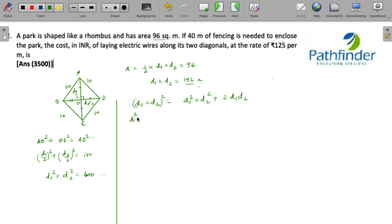Which means d1 square plus d2 square will be d1 plus d2 whole square minus twice of d1 into d2.